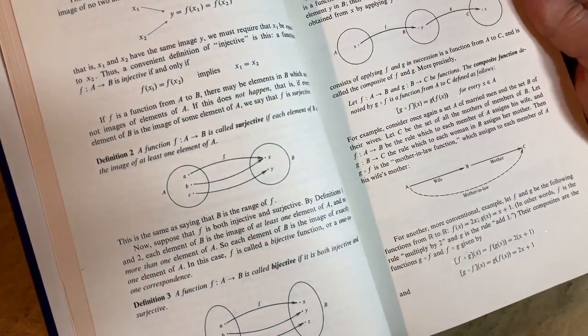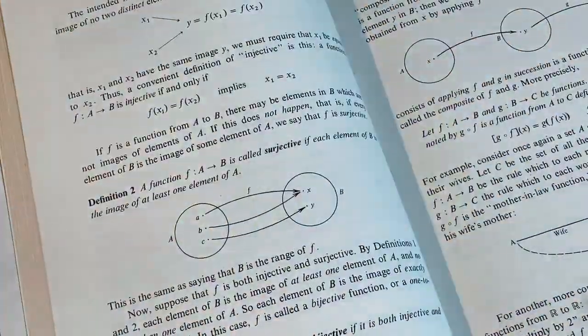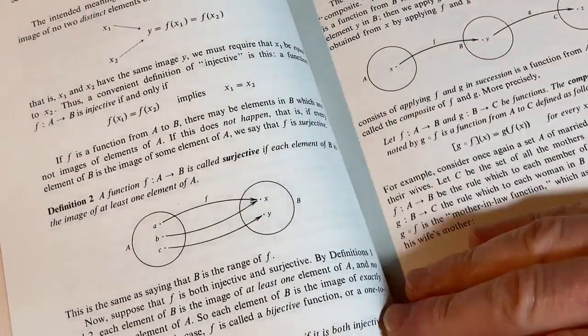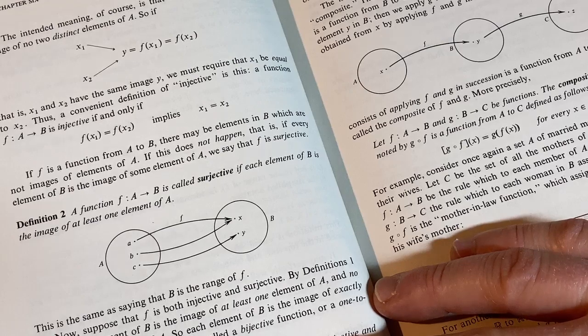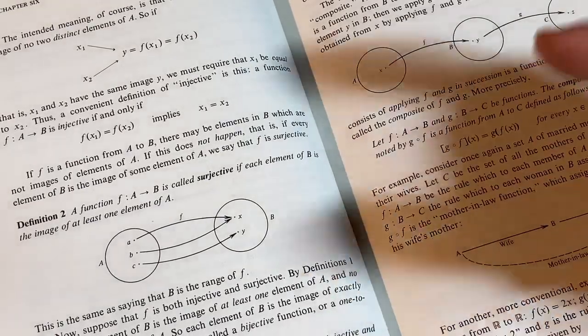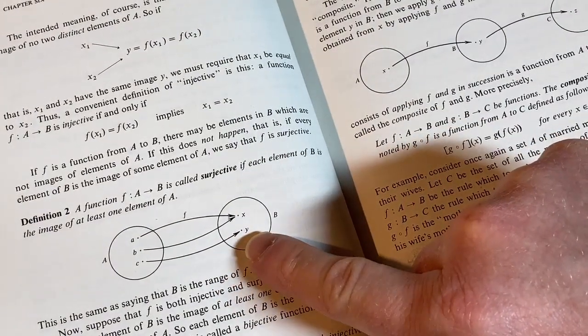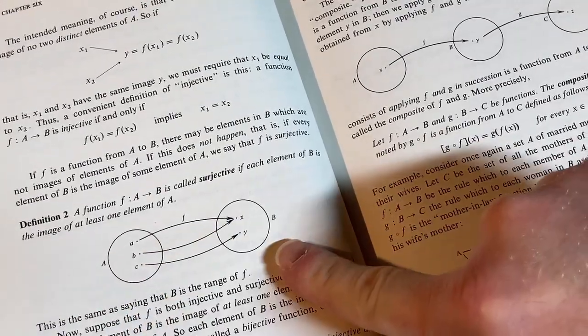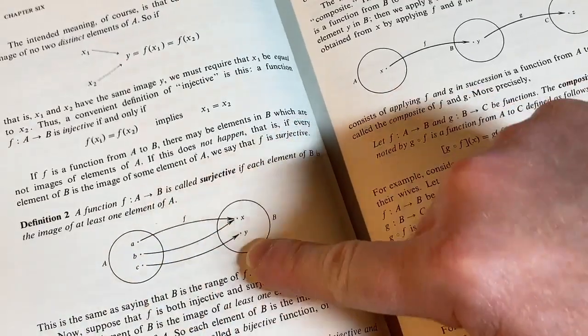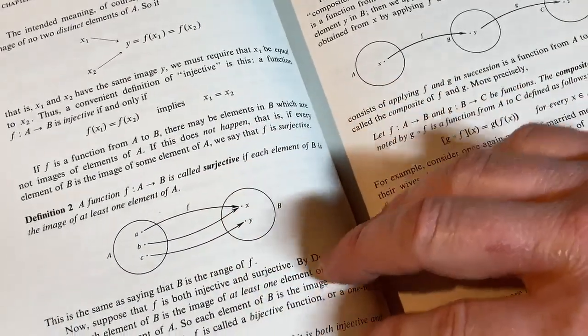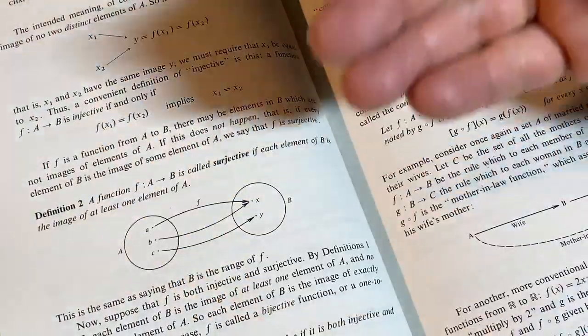So this book has really good explanations. It's a very standard layout here. It defines a function to be surjective. It says a function, let me zoom in here so you can see it. A function F from A to B is called surjective if each element of B is the image of at least one element of A. So he's giving an intuitive definition. So basically what he's saying is if you pick an element here in B, if you pick an X or a Y, you're always going to be able to find an element here that goes there. So if you pick an X, look, A and B both go there. Pick a Y, C goes there. So this function, this image here gives you the idea of what a surjective function is.